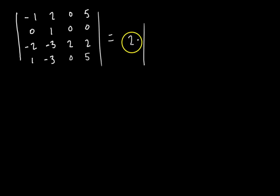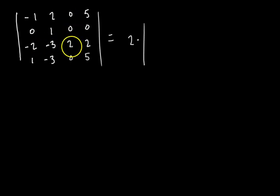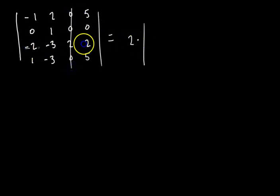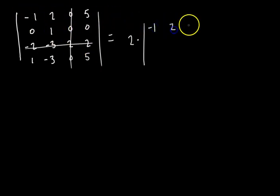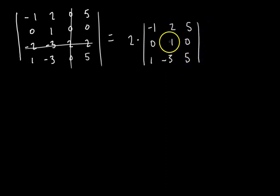Is this 2 positive or negative? Following the pattern +, −, +, −, + it's positive. Or: the 2 is in the third row, third column, so 3+3=6, and (−1)^6 = +1 — positive. So we have 2 times the determinant of the 3x3 minor, which is obtained by crossing out the third row and third column: the entries are −1, 2, 5, 0, 1, 0, 1, −3, 5. This cofactor expansion is recursive — you keep applying it to smaller minors until you reach 2x2 matrices.